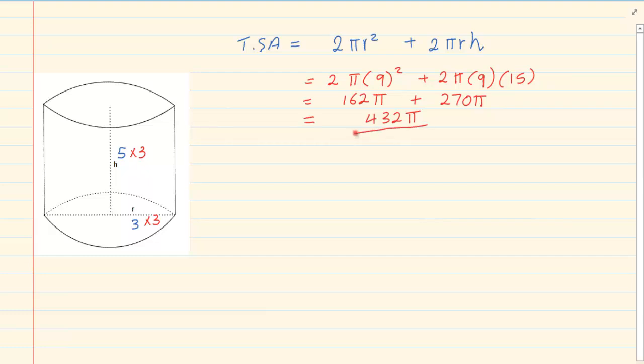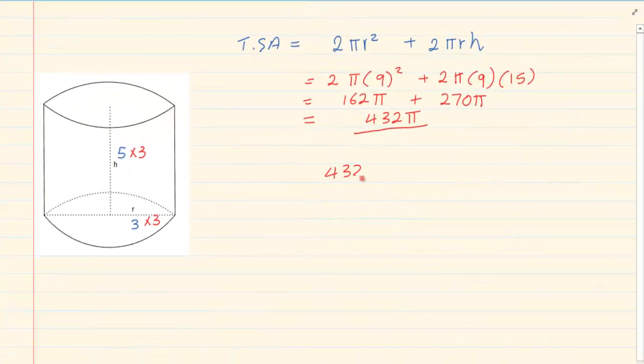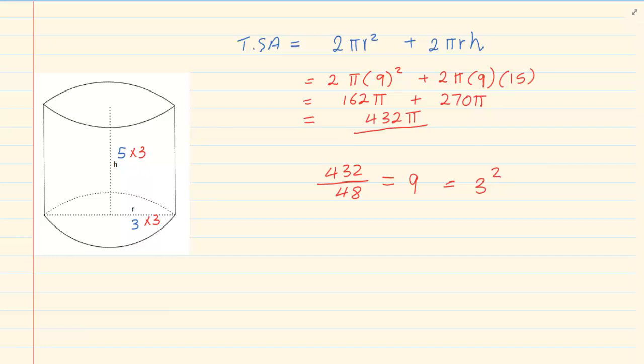Now when we worked it out earlier, we worked out the surface area to be 48π. If you take the new divided by the old, what do we get? 9, which is equal to 3 squared. Which means that if you didn't want to do the entire calculation, all you had to do was say 48 times 3 squared.